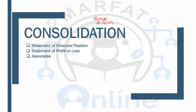When we talk about group accounts, you will see who is in the group accounts. You will see the parent, which is also known as the holding company — the acquirer which has acquired shares in the other company. This is the holding company known as the parent. And then we have the subsidiary, and then we have the associates.